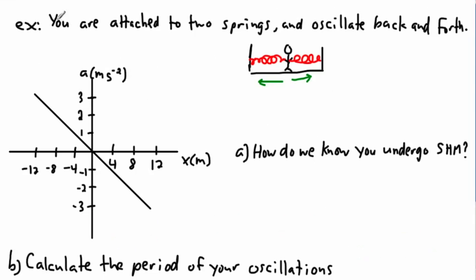So let's look at an example. Here, let's say you're attached to two springs and you oscillate back and forth, some such a situation like this. So here you go, you're going all back and forth here like this. Well, first of all, by the way, your graph of your motion is like this. So you have acceleration versus displacement. Your graph does this. And the first question asks, how do we know you undergo simple harmonic motion?